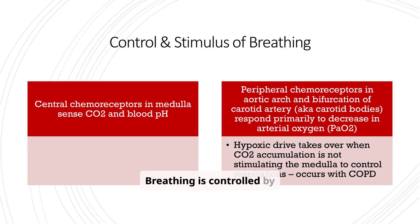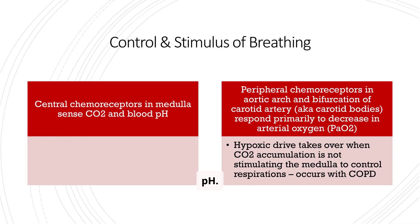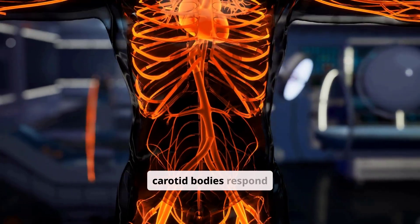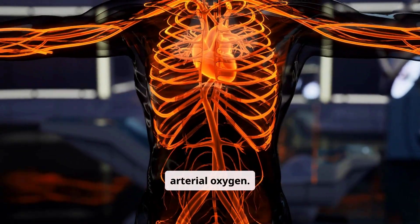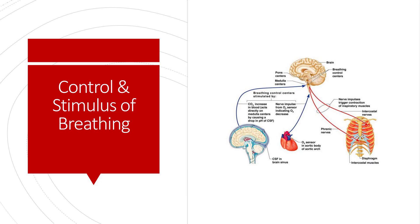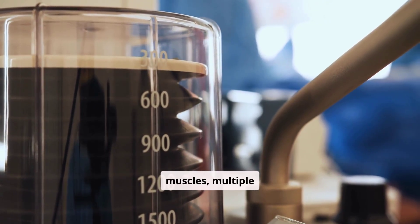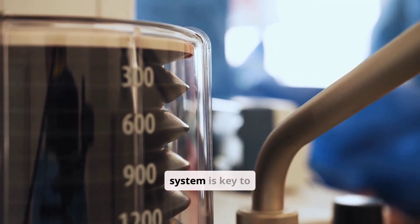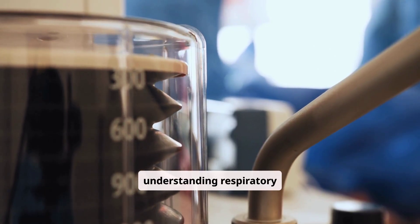Breathing is controlled by central and peripheral chemoreceptors. Central chemoreceptors in the medulla sense CO2 and blood pH. Peripheral chemoreceptors in the aortic arch and carotid bodies respond primarily to a decrease in arterial oxygen. Multiple components work together to regulate respiration, from the brain centers to the diaphragm and intercostal muscles. Understanding this system is key to understanding respiratory dysfunction.